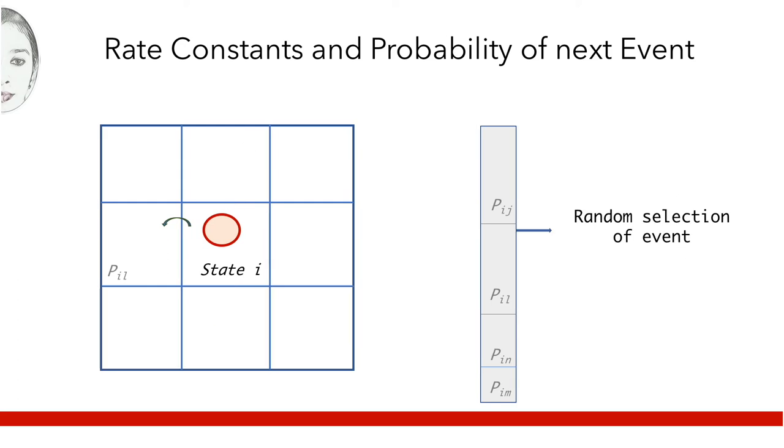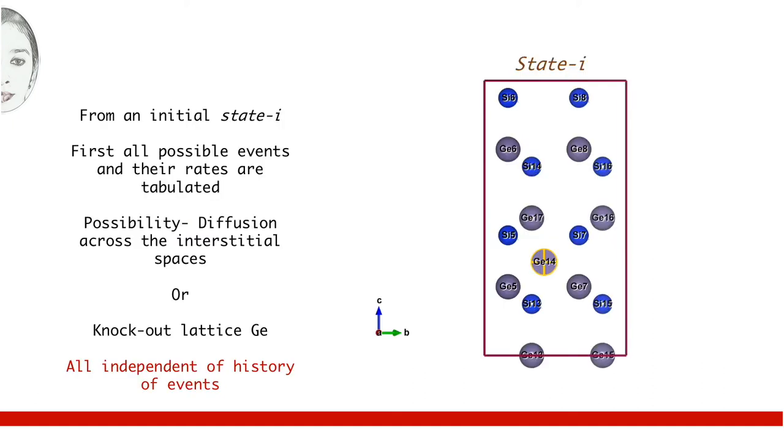Subsequently, this event is then executed. This is elaborated again in a silicon-germanium crystal. There, an initial state i where germanium 14 is an interstitial atom, it has several possibilities of next event. It can either diffuse through lattice space or knock out another lattice germanium.